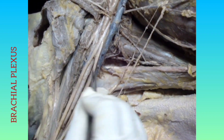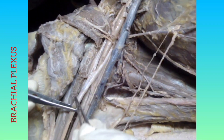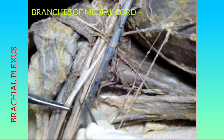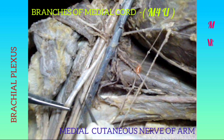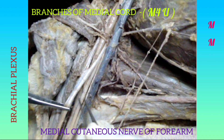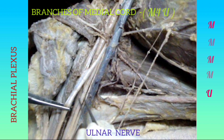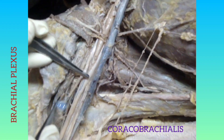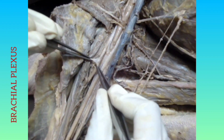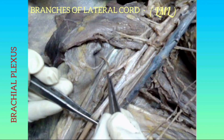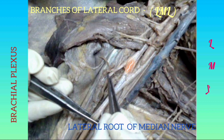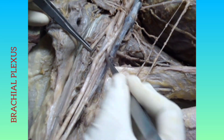When we trace the ulnar nerve upwards, it shows a communication with a branch going towards the median nerve. The median nerve is formed by the medial root and the lateral root. These are the branches from the medial cord: medial pectoral nerve, medial cutaneous nerve of arm, medial cutaneous nerve of forearm, medial root of median nerve, and ulnar nerve. Tracing the lateral root upward, we find the musculocutaneous nerve, which pierces the coracobrachialis and supplies it. The branches from the lateral cord include the lateral pectoral nerve, musculocutaneous nerve, and lateral root of median nerve.